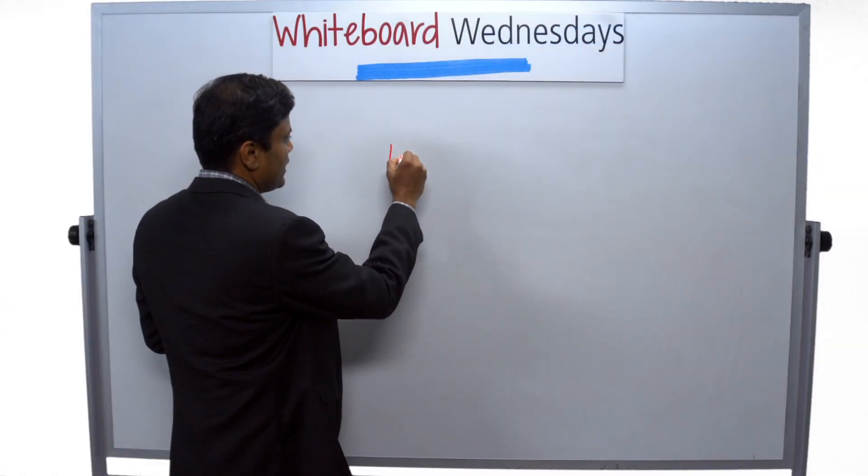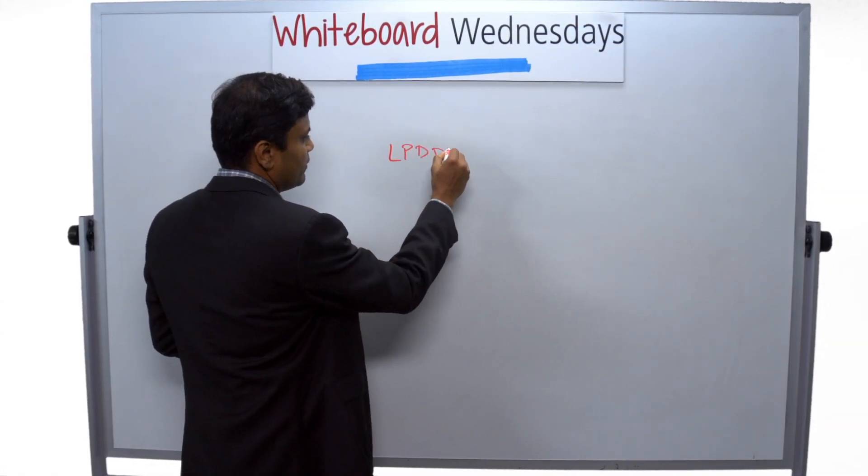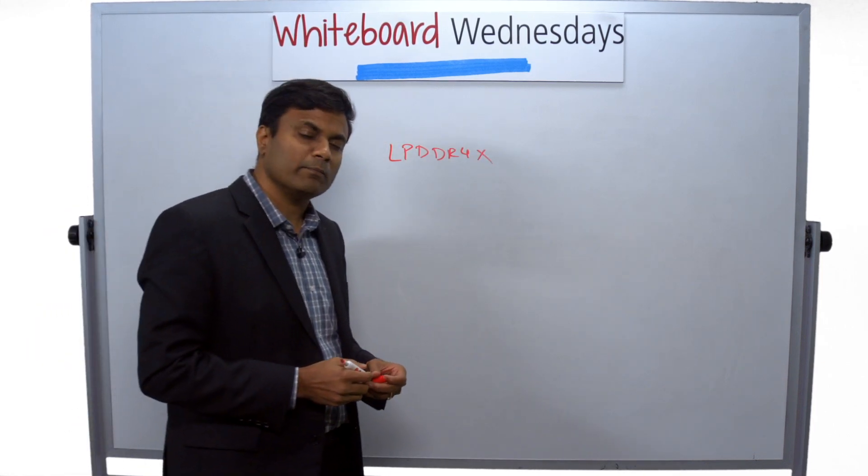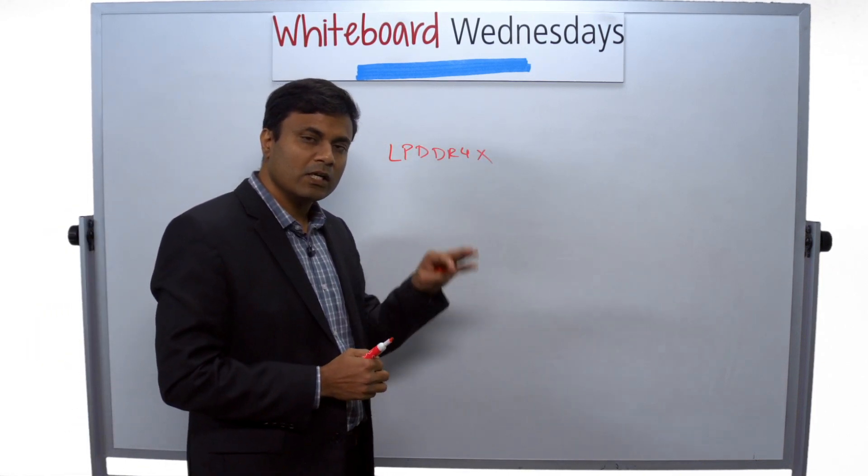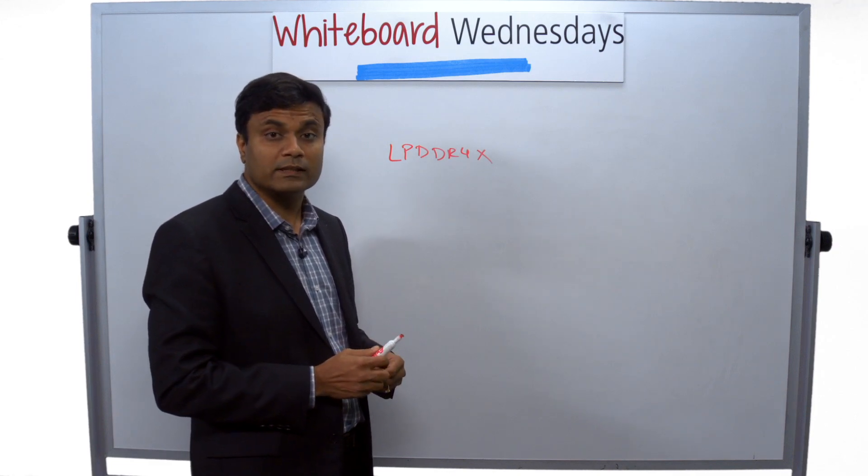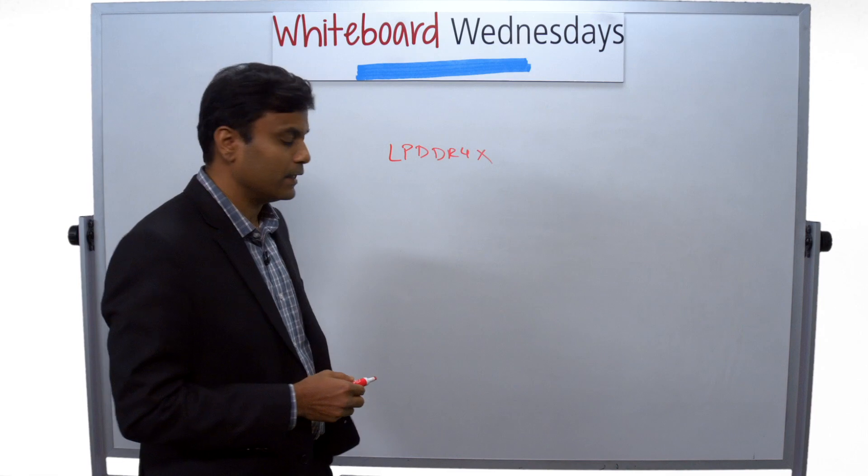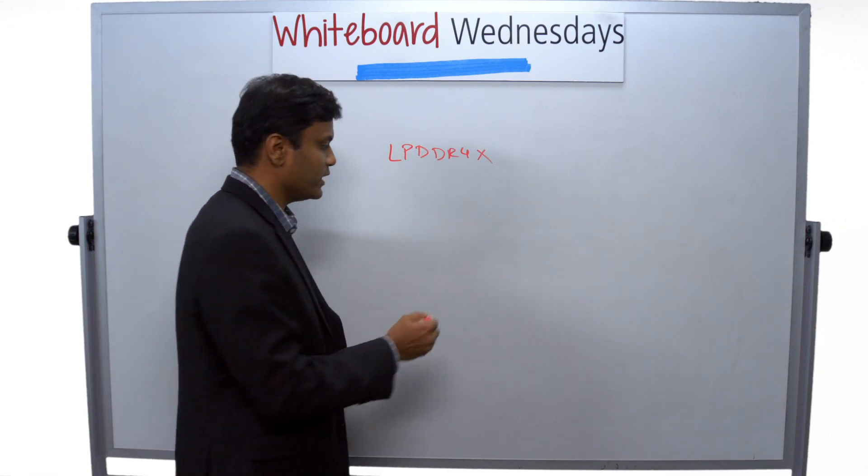LPDDR4X, as the name stands, is a derivative of LPDDR4. What it does is significantly improve the power efficiency by lowering the VDDQ voltage levels that are used in the signaling protocol for the communication between DRAM and SOC.